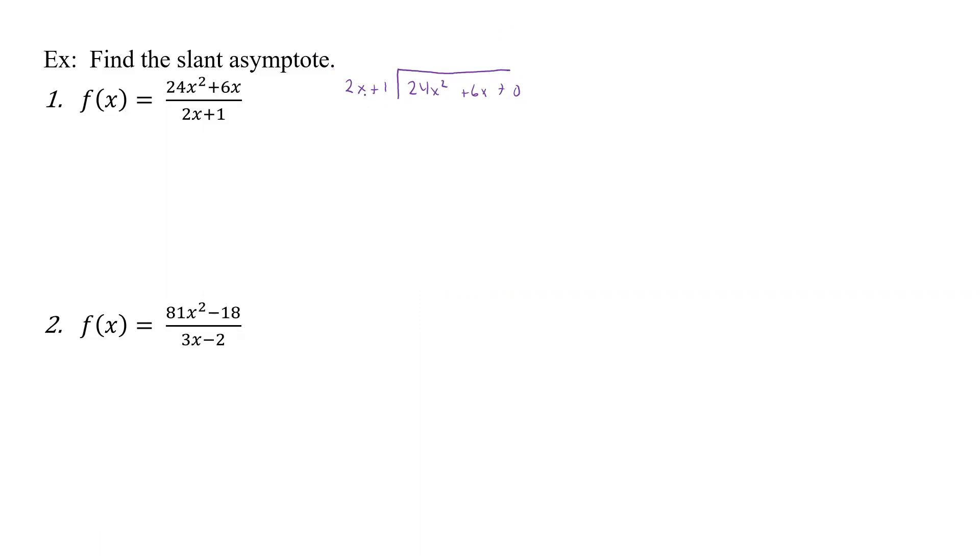Alright, so 2x times what gives me 24x squared? Well that's going to give me 12x. So 2x times 12x is 24x squared, and 1 times 12 is going to be plus 12x. Now I subtract off the whole thing, so 6x minus 12x is minus 6x. Bring down our 0.